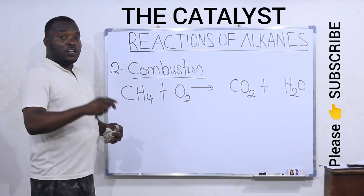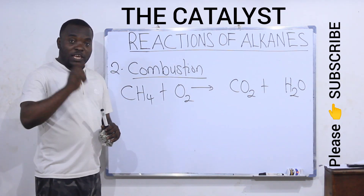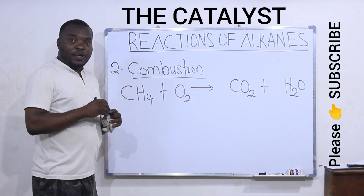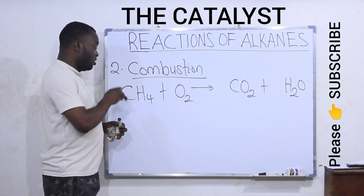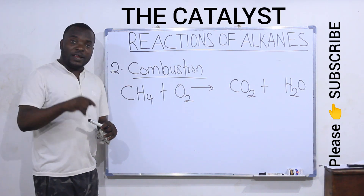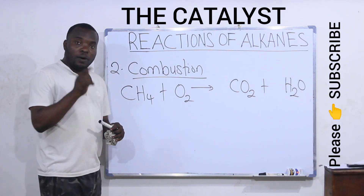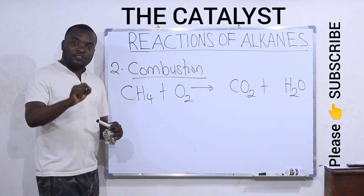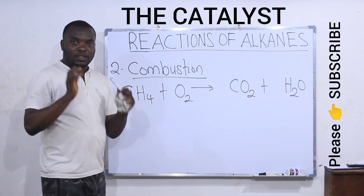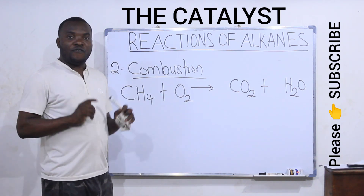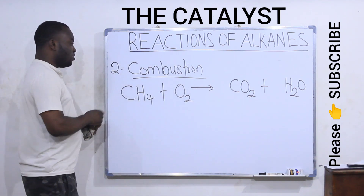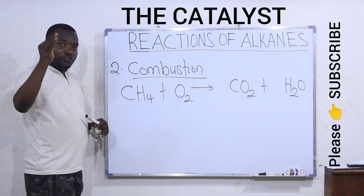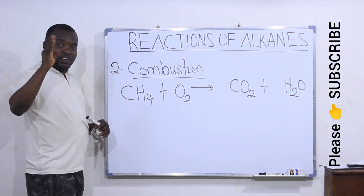If you want to get your answer quickly, note this: the first element you should balance in the equation is carbon. After balancing carbon, balance your hydrogen. The last one you will balance should be oxygen. In that way, you will be faster. So: balance carbon first, balance hydrogen second, then balance oxygen last.